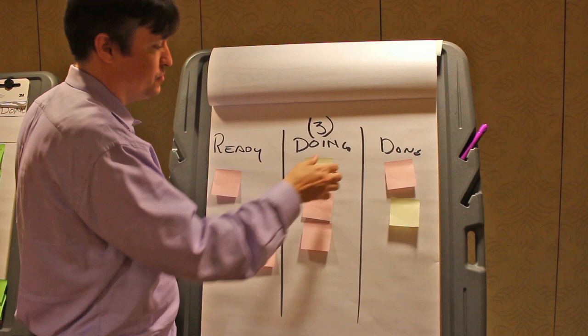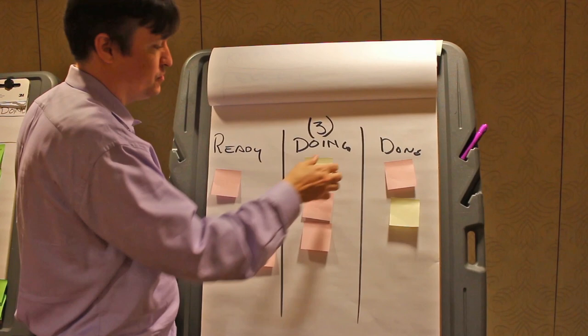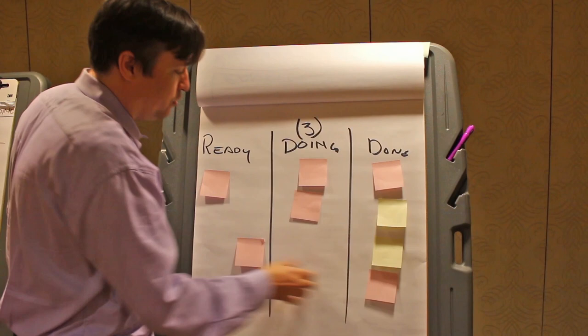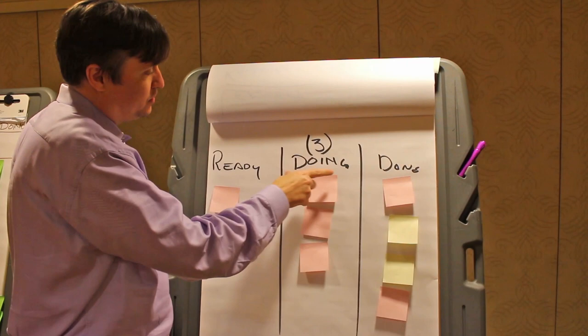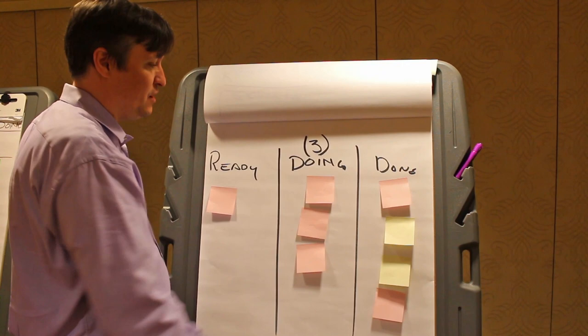Once work starts to move — whether this is for ourselves or for a team — we start to see the flow of work. We can measure that. We can start making better decisions about how we work, who we're doing things for, and why we're doing what we're doing. This doing column right now is for convenience. You can expand it out to have all of the steps in your value stream that you wish, whatever is relevant.